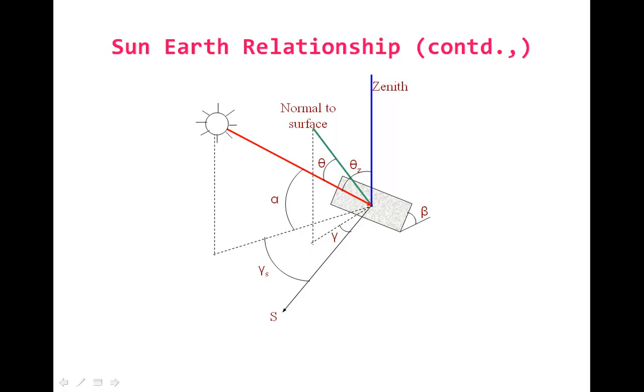Similarly, in the vertical tracking, that is the zenith angle tracking systems, the beta can be adjusted so that it is equal to the theta-Z. Then finally, by adjusting these two tracking axes, that is the double-axis tracking systems, finally the normal to the surface passes through the sun beam. That is theta becomes 0. Because cos 0 degrees is equal to 1, then we can collect maximum amount of solar radiation on the inclined surfaces. This is the basic principle involved in the two-axis tracking systems of the inclined surfaces.